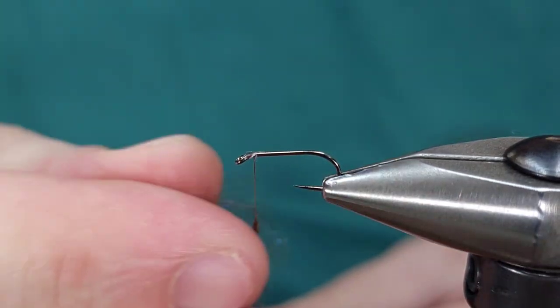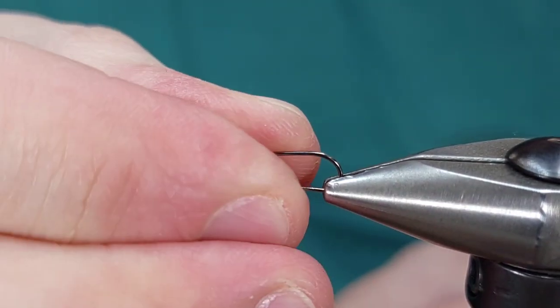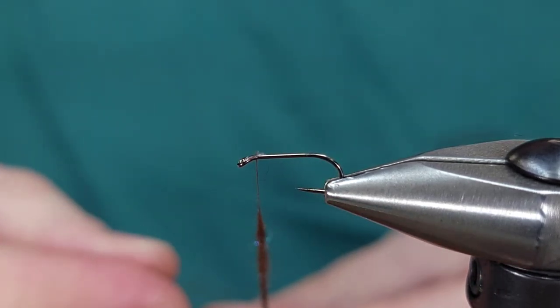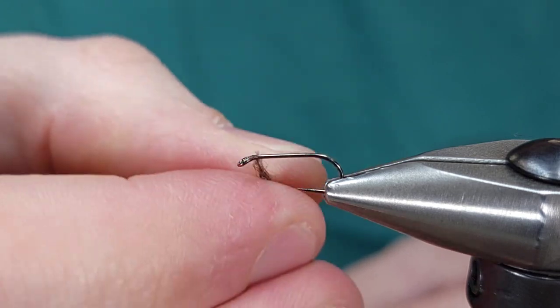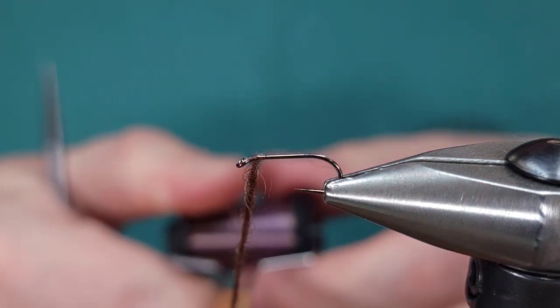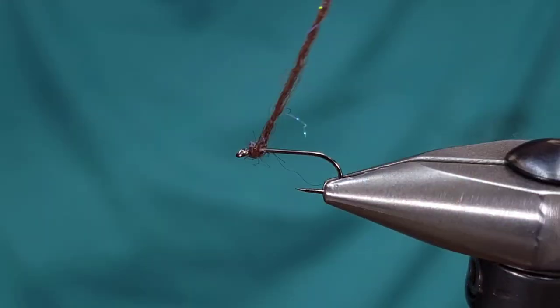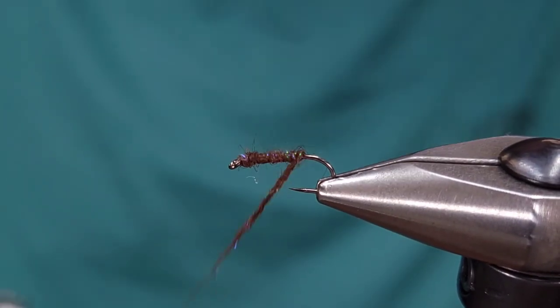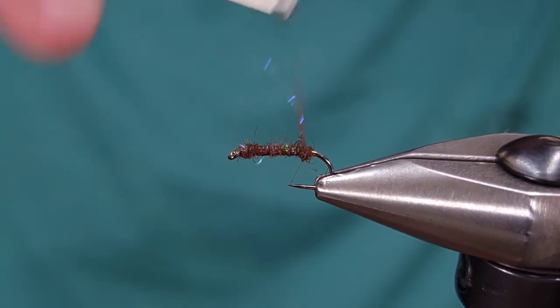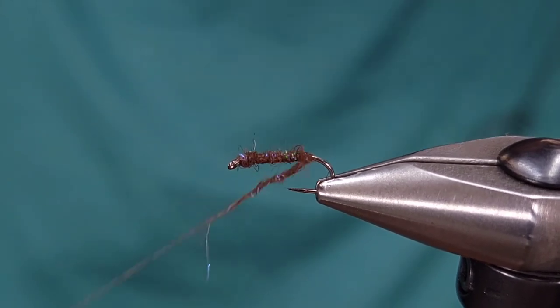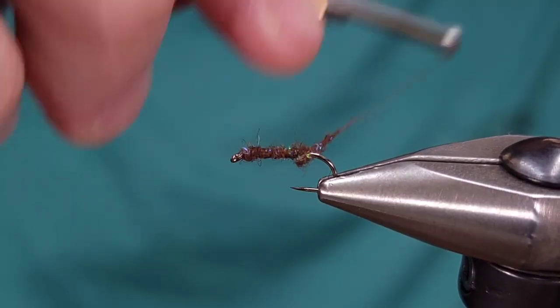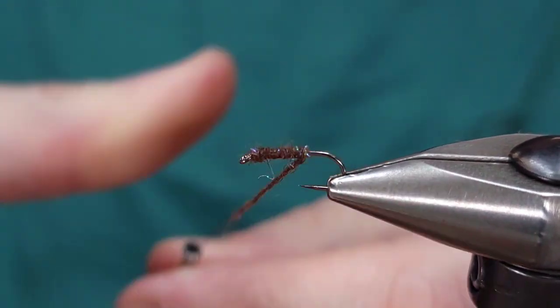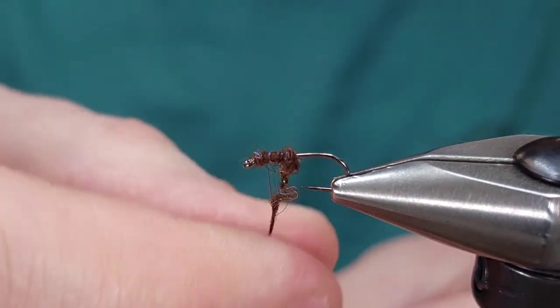I personally like this little mix of dubbing because it has a tiny bit of flash in it, which adds another variable to this fly that I think makes it super effective. I'm actually going to reverse dub this fly. You want a thicker taper on the front end and thinner on the back. You can see here I didn't do a great job of tapering that, so I'm actually going to undo that real quick and redub this.